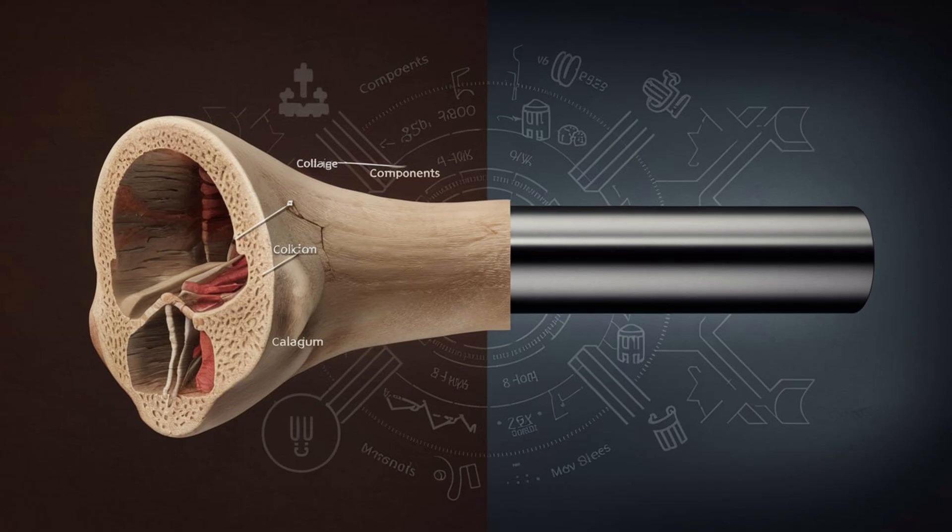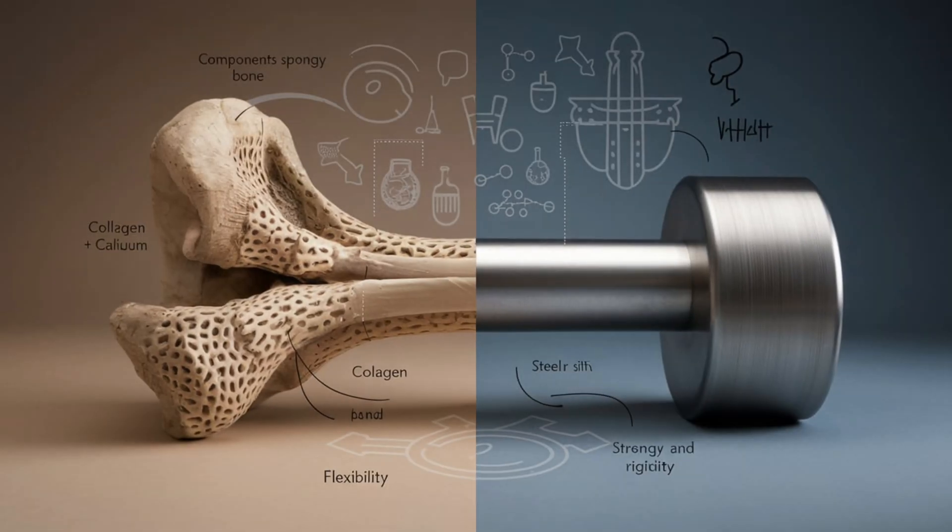Inside the bone, you'll find a network of tiny structures called trabeculae, arranged like a honeycomb. This internal pattern allows bones to withstand a lot of pressure and absorb impacts without breaking. It's like nature's version of an engineering marvel.